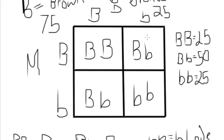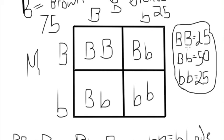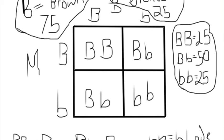Once you've done the Punnett square, you need to know how to find the probability of the different genotypes — genotype is the genes that it has — and then the probability of the different phenotypes. I try to figure out what genotypes are possible by looking at all the boxes, and then figure out what the possible phenotypes are. In this case I had brown and blonde for phenotypes, and big B big B, big B little B, and little B little B for genotypes.